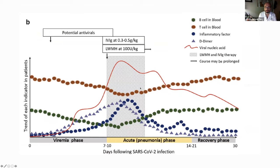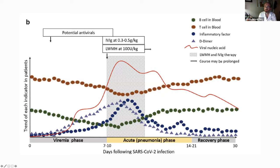Here we have a peak of viral load, but a therapy that modulates the inflammatory response and controls the thrombotic phenomena associated with the virus can lead to a decrease in inflammatory response and recovery. The patient doesn't enter the hyperinflammatory stage, so no respiratory support is necessary, and the patient recovers by controlling the inflammatory response.